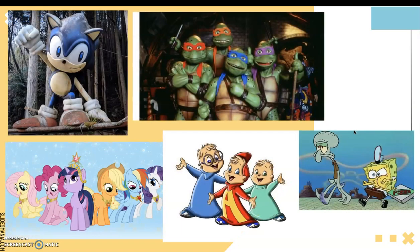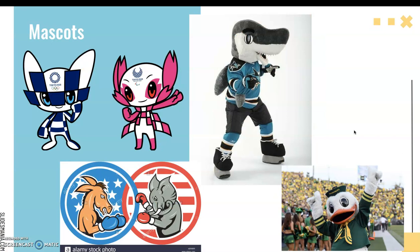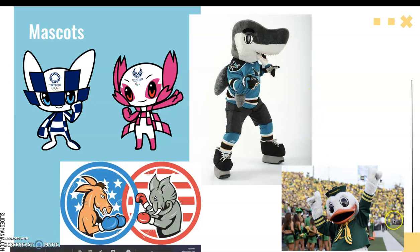There are many more examples: Sonic the Hedgehog, the Teenage Mutant Ninja Turtles, My Little Pony, Alvin and the Chipmunks, SpongeBob — these are all things that most of us are familiar with. Mascots are also anthropomorphic. We have a couple mascots here for the Tokyo 2020 Olympic Games. When we think of political parties, we think of donkeys and elephants. We have Sharky from the San Jose Sharks and another mascot from Oregon, the Oregon Ducks.